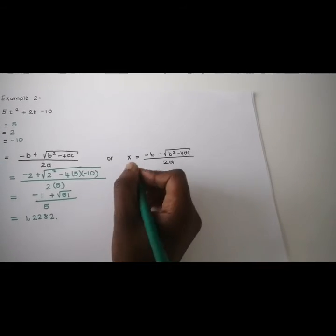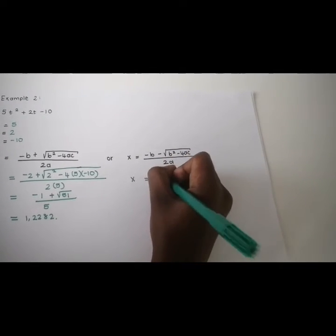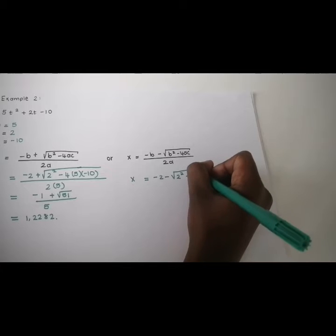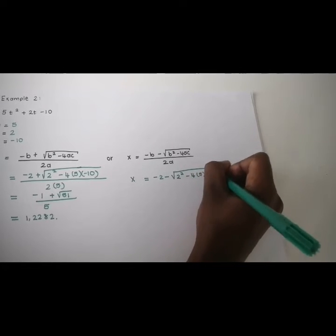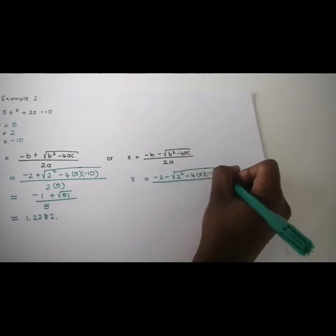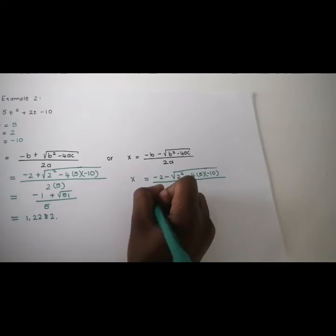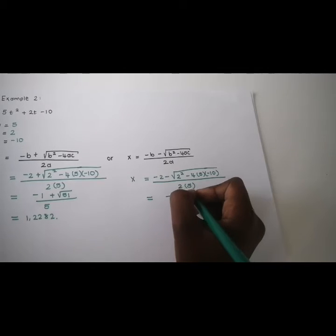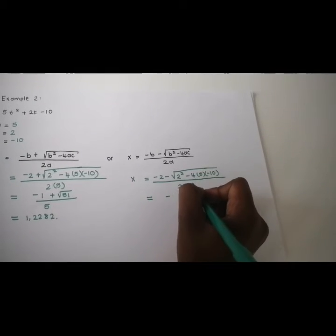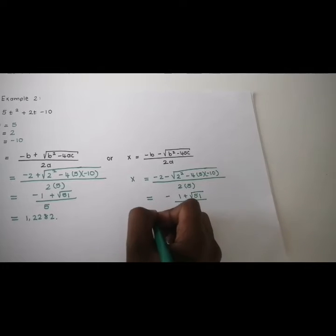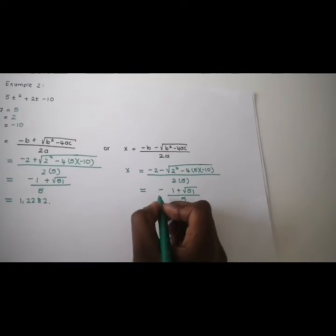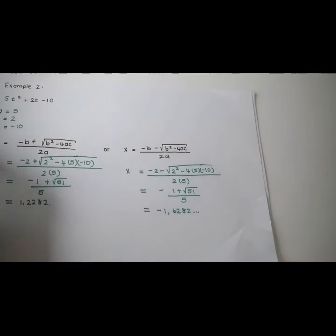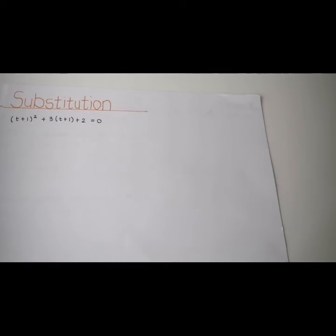The second root: x equals negative 2 minus the square root of 2 squared minus 4 times 5 times negative 10, all over 2 times 5. That equals negative 1 plus root 51 over 5, and as a decimal it's approximately negative 1.6282. We're done.